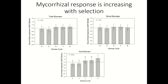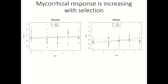This is just another way to look at that data. On the left we have shoots; on the right, roots — with some regression lines. The solid circles and solid line represent AMF; the open circles and dashed line represent sterile. With shoots, there's a slight positive trend across cycles in mycorrhizal responsiveness, and then there's a much stronger slope in the roots on the right.